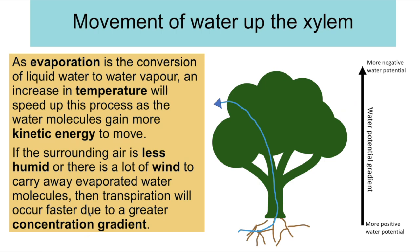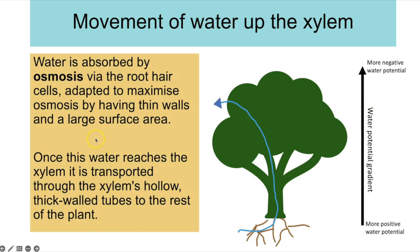Thinking about how water moves up the xylem: transpiration is evaporation through the stomata of the leaves, and as evaporation converts liquid water to water vapour, certain factors increase its rate. Temperature increases the rate because water molecules gain more kinetic energy and move more rapidly, producing more evaporation. If the surrounding area is less humid, or wind carries away evaporated water molecules, there is a steeper water potential gradient and therefore more water evaporates out. Water is absorbed by osmosis via root hair cells, with a large root network increasing surface area to maximise osmosis.